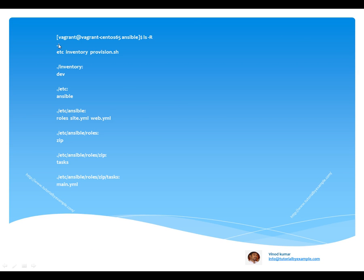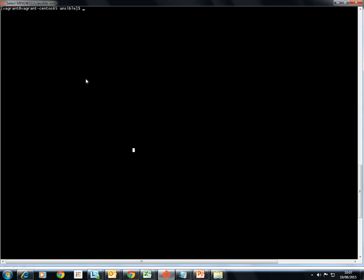I have installed Ansible on CentOS as a Unix environment. In the current directory there is an etc folder, an inventory folder with a provision.sh file. In inventory I have a dev file, in etc I have an ansible directory, and inside ansible I have a roles directory, site.yml, web.yml, and a zip directory. In zip we have a tasks folder, and in tasks we have main.yml.